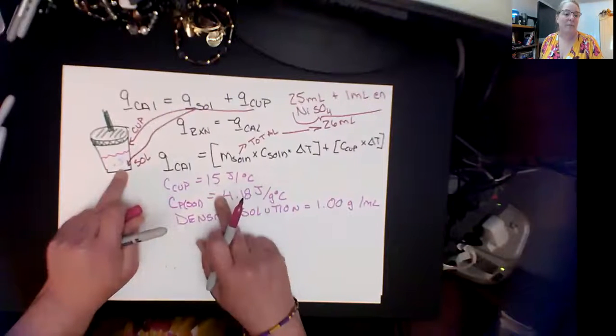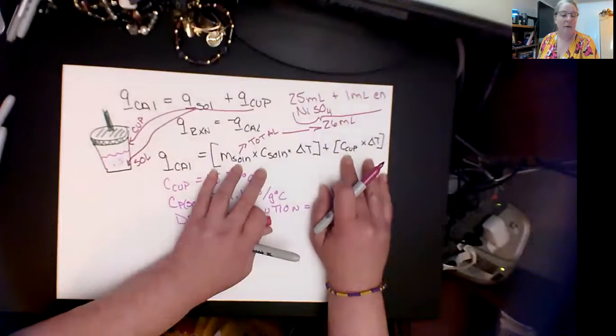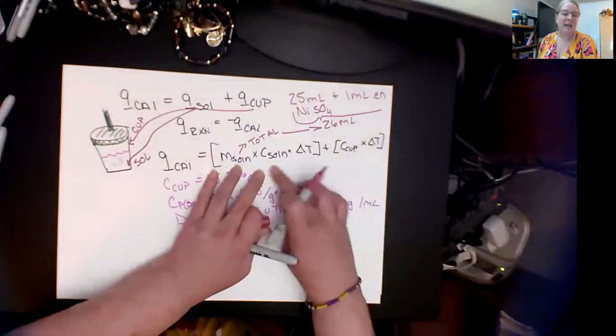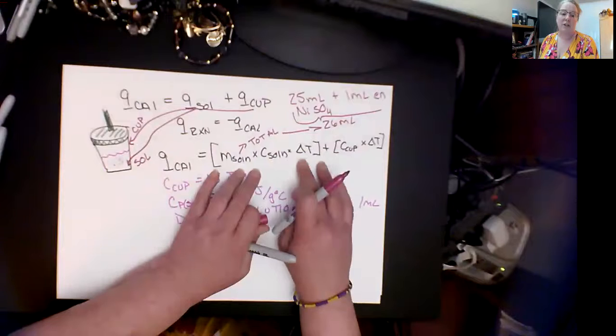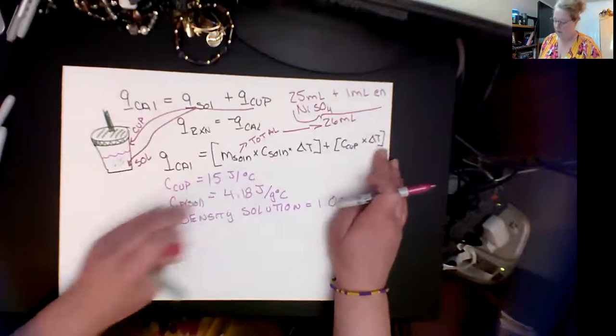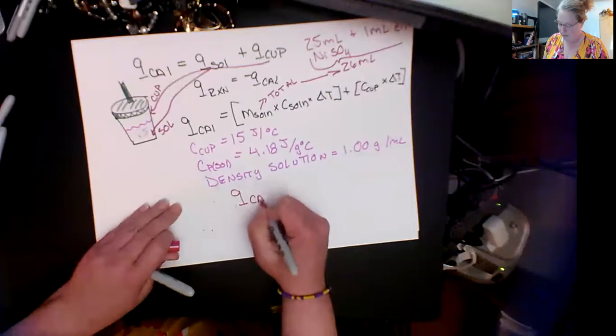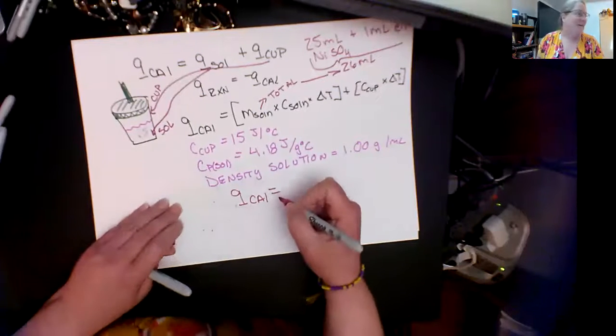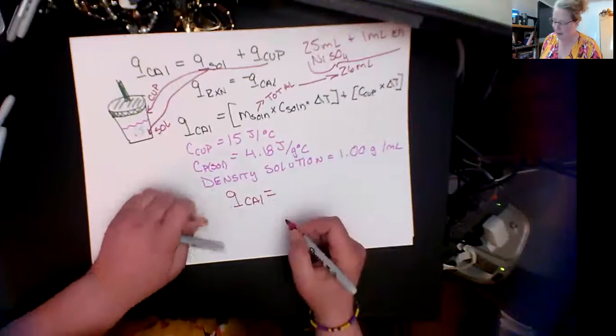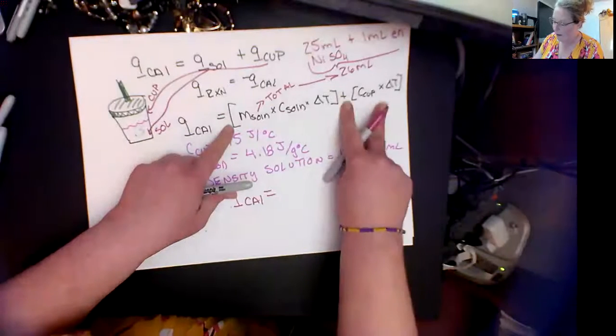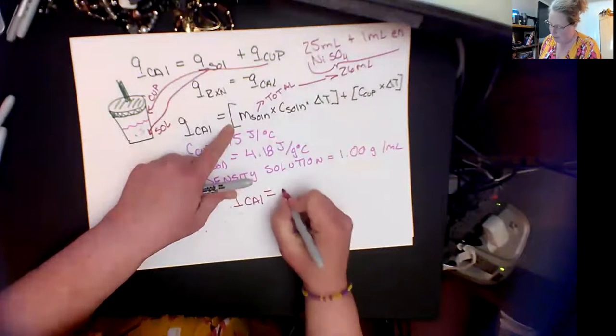It's not done in terms of mass, just in terms of change in temperature. This is how much it will absorb. When we put those two things together for our calorimeter and our cup and our solution, we get this equation where this is the mass and the specific heat of the solution and the change in temperature of the solution, and then the C of the cup and the change in temperature of the cup.